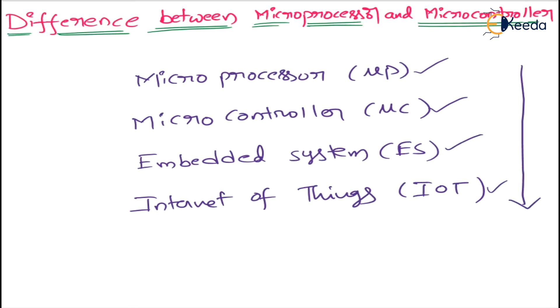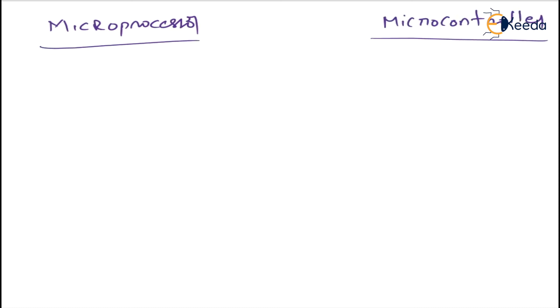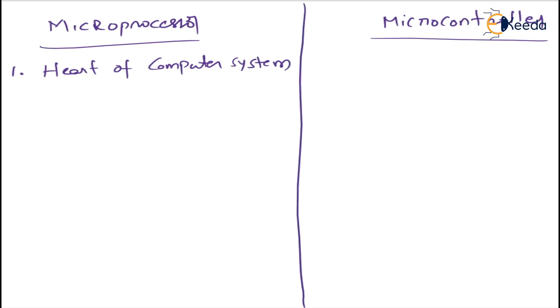Now we will discuss the main difference between microprocessor and microcontroller. A microprocessor is a programmable control device which can perform fetching, decoding, and executing. The definition of microprocessor: it is a program control device which performs fetching, decoding, and executing. Microprocessor is the heart of the computer system, whereas microcontroller is the heart of the embedded system.